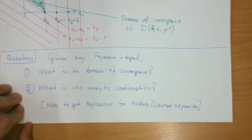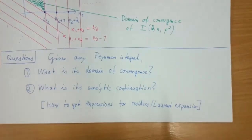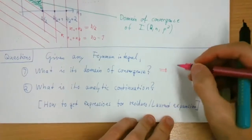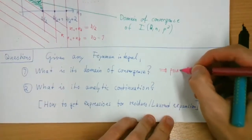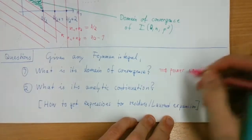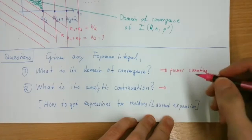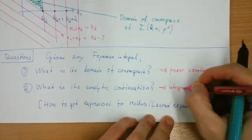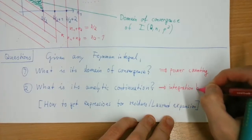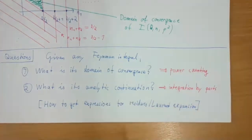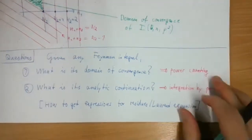A very broad statement would be that the first question is solved by some generalization of power counting, and the second is closely related to integration by parts. I'll try to sketch how this works, then state the main results and show some examples.